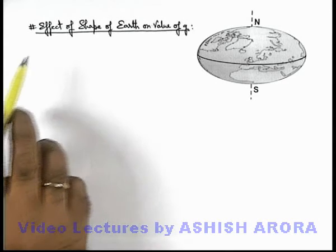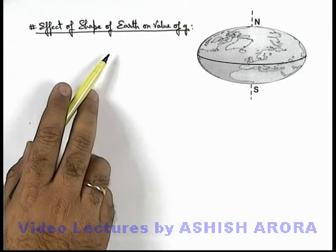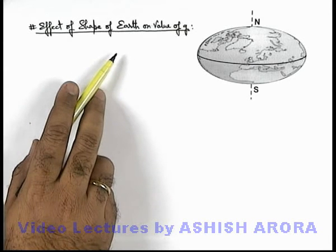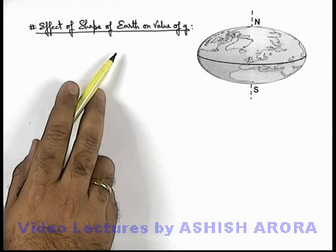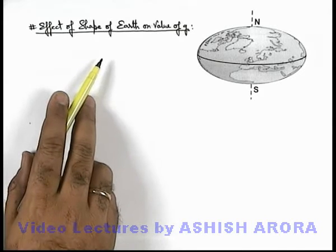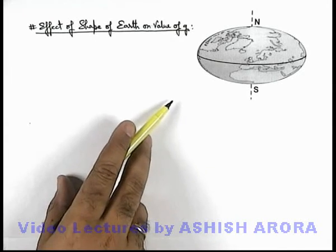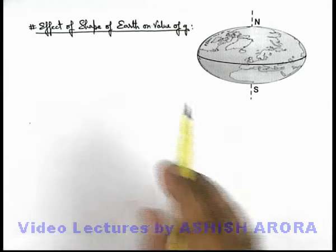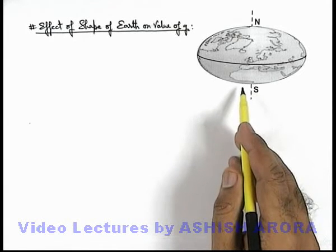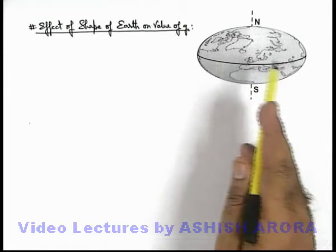Let us discuss the effect of shape of earth on value of g. To analyze the effect of earth curvature on value of g, first let's have a look on the actual shape of earth. This picture shows us the actual shape of earth. We can see that earth is not actually spherical, it is ellipsoidal in shape.